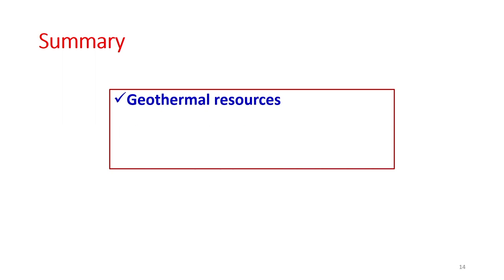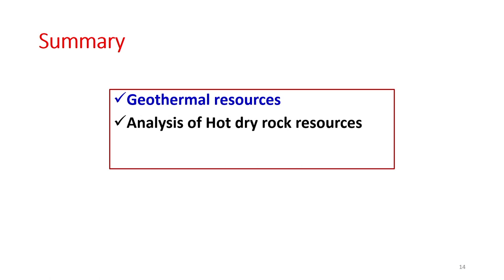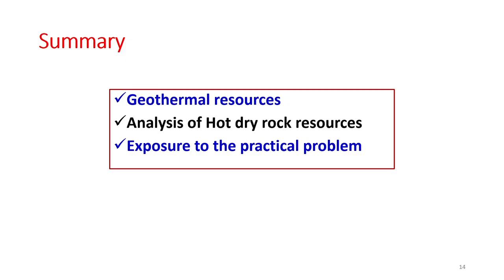To summarize today's lecture: we recapitulated geothermal resources, analyzed the available energy, estimated how fast energy decreases with extraction, and calculated temperatures over time. Everything discussed — from resources to extraction rates — can be analyzed using the expressions derived. We also solved a numerical problem to understand the process of estimation and calculation of geothermal potential. Thank you very much for watching; I hope you have gained good information about geothermal energy resources and extraction processes.